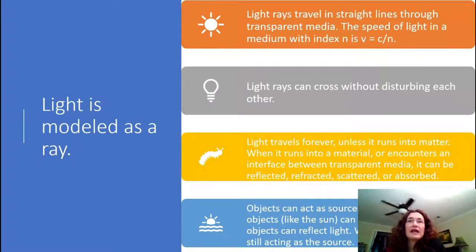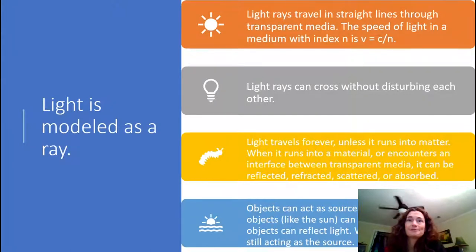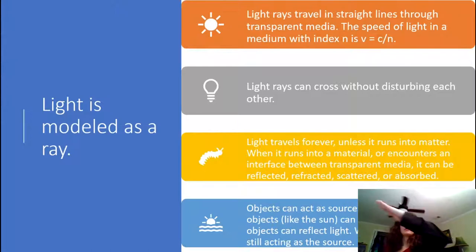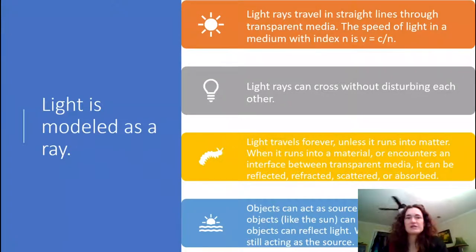Another big assumption is that light rays can cross without disturbing one another. This may seem counterintuitive if you know anything about interference, but for the topics we're going to be dealing with — reflection, refraction, and that kind of thing — this works very well. If you have light ray one and light ray two and they cross at some point, they won't disturb one another. Light ray one keeps going in its direction and light ray two keeps going in its direction. Their frequency, their speed — none of that is altered.